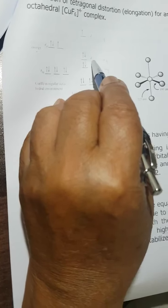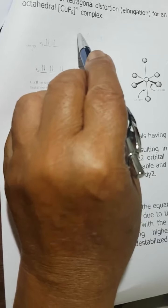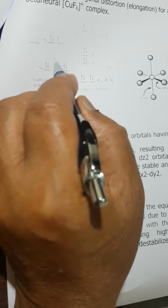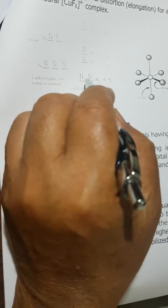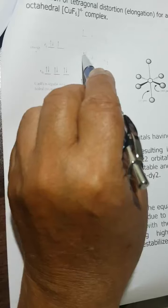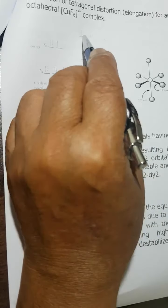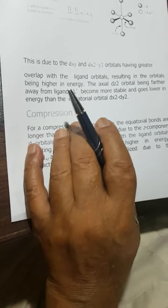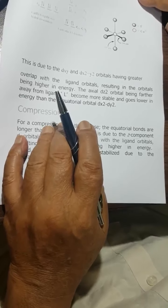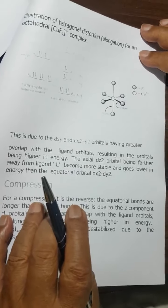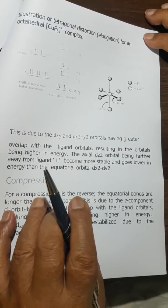The crystal field splitting changes. Instead of seeing only one band, you will see one transition from here to here and a second from here to here. This is a good example of d9 where we see tetragonal distortion.